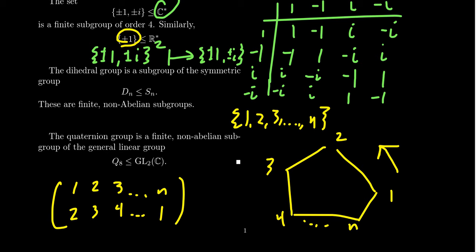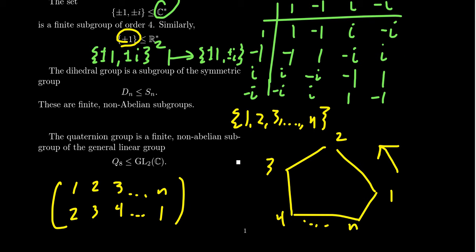Another example is the quaternion group Q8, a non-abelian group of order 8 consisting of eight 2×2 complex matrices. When we argued that Q8 was a group, we essentially argued that Q8 was a subgroup of GL2(C) — the general linear group of non-singular 2×2 complex matrices. We had to argue that the restriction of complex matrix multiplication forms a binary operation on Q8, and using Cayley tables we showed that Q8 is a group, simultaneously showing that it is a subgroup of GL2(C). These are all examples of groups we've learned about already, along with some of their subgroups.